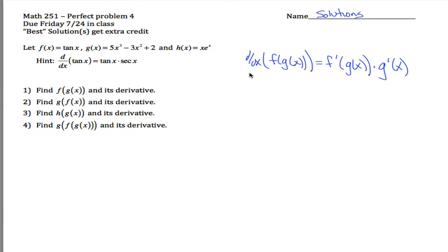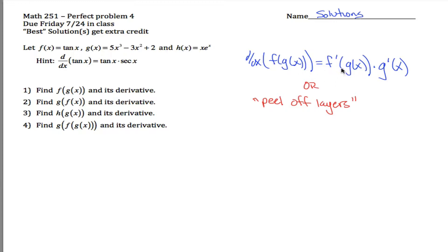I think it's easier — maybe I'll say — to peel off layers. I think this second method is far superior to the first method, especially when you have several different nested functions like this last one where we have four nested functions. This can be really a pain to try to get the first method to work. I think it's a lot easier to do it the second way, so I'll depict that way in these solutions.